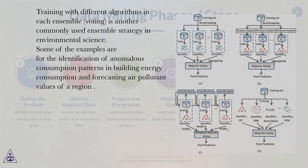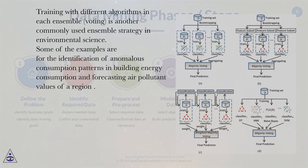Training with different algorithms in each ensemble — voting — is another commonly used ensemble strategy in environmental science. Some examples include identification of anomalous consumption patterns in building energy consumption and forecasting air pollutant values of a region.